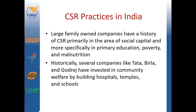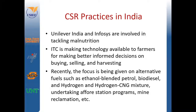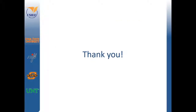Large, family-owned companies have a history of corporate social responsibility, primarily in the area of social capital, and more specifically in primary education, poverty, and malnutrition. Historically, several companies like Tata, Birla, and Godrej have invested in community welfare by building hospitals, temples, and schools. Unilever India and Infosys are involved in tackling malnutrition. ITC is making technology available to farmers for making better informed decisions on buying, selling, and harvesting. Recently, they focused on alternative fuels such as ethanol-blended petrol, biodiesel, and hydrogen and hydrogen CNG mixture, undertaking afforestation programs, mine reclamation, and so on. While there is much left to do regarding sustainability, both companies and countries are making significant strides to make improvements in sustainable processes.